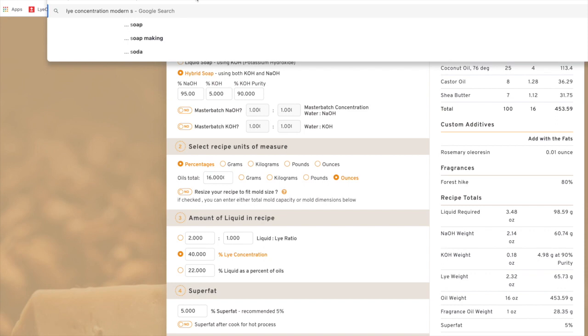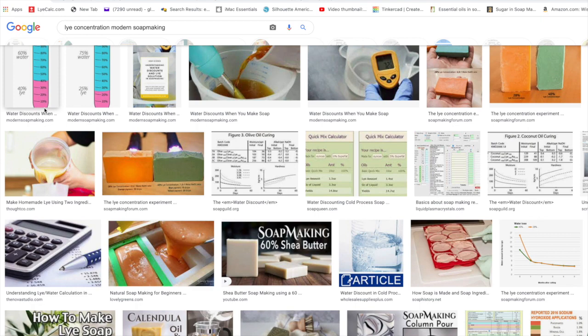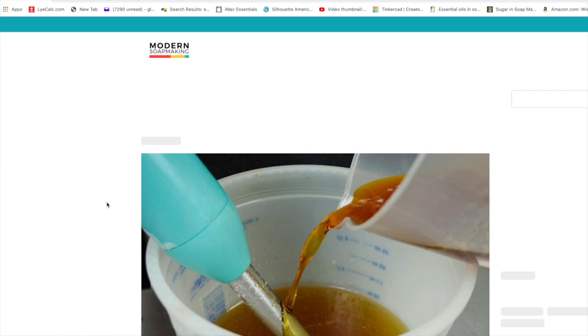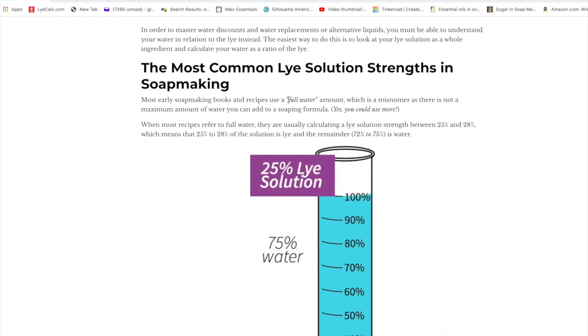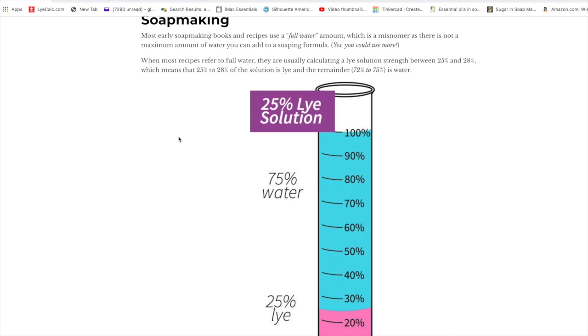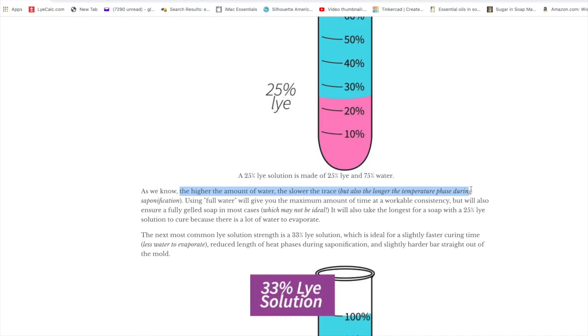If you want to understand more about the percentage of lye concentration, if you go to the Modern Soap Making website, she has a blog that explains it really well, and I'm going to link that below in the description box. In that blog post, about halfway down the page, she shows this graphic that simply shows the lye solution and how you have usually 75 percent of water in it and then 25 percent of lye.